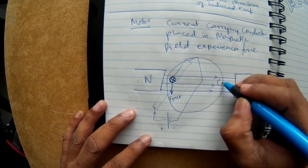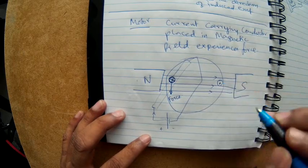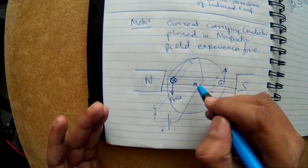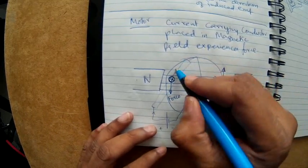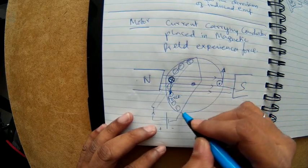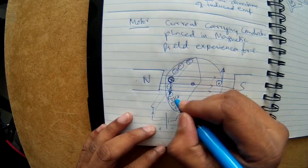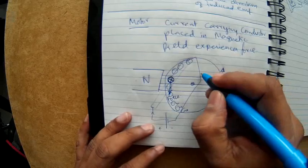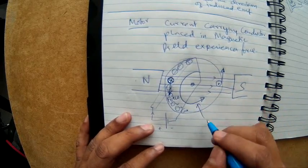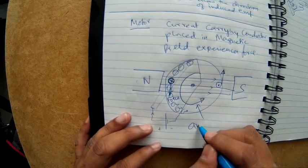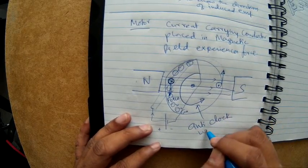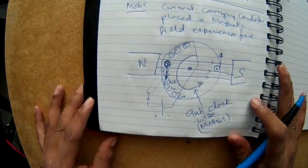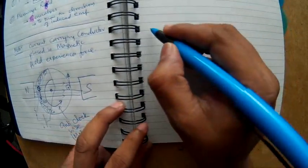If there is an armature with another conductor on the other end marked with a dot, the force on that one will be upwards. Two forces acting opposite each other around a fixed center produce a torque. With many other conductors around the armature, all the small forces add up, resulting in rotation — in this case, anticlockwise. This is the motor.